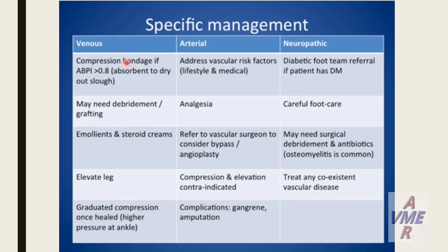For venous ulcer, we have to do compression and surgical debridement first, emollient for the surrounding eczema, elevating the limb, and treating the etiology — either obstruction or reflux. For arterial ulcer, you have to address the vascular factors of atherosclerosis and refer to vascular surgery to assess with more investigation and imaging, considering angioplasty and bypass. Note: compression is contraindicated in arterial disease.